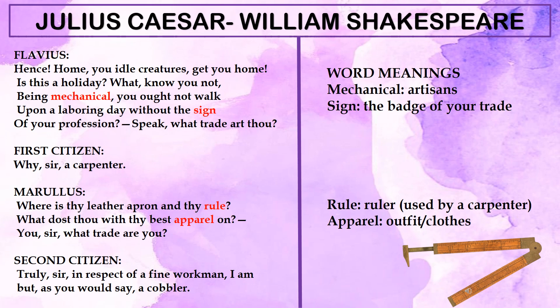When Flavius asks the first citizen 'What trade art thou?', the first citizen answers that he is a carpenter. Then Marullus comes forward and asks: if you are a carpenter, where is your leather apron and your rule? You should be wearing your professional badge and carrying your ruler. Instead, you are wearing your best attire and roving about the streets.